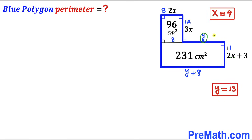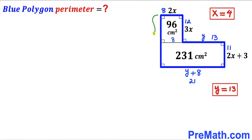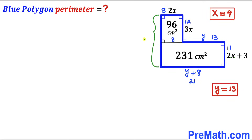So y turns out to be 13 centimeters. Therefore y plus 8 equals 13 plus 8, which gives us 21 centimeters. Finally, the remaining side length is the sum of the two individual lengths 12 and 11, so that side is 12 plus 11 equals 23 centimeters.